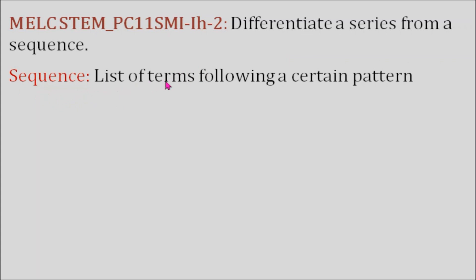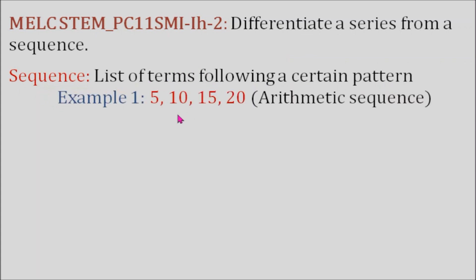The second learning competency is to differentiate a series from a sequence. A sequence is a list of terms following a certain pattern. For example, we have 5, 10, 15, 20. This is what we call an arithmetic sequence. The common difference here is 5, meaning if we add 5 to the first term, 5 plus 5 equals 10, then 10 plus 5 equals 15, and 15 plus 5 equals 20.